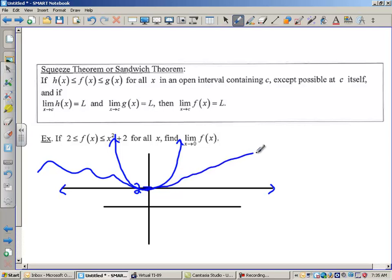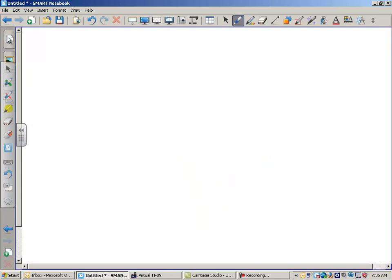And so even though I don't know anything about f, I know that since it's always in between 2 and x squared plus 2, then its limit must be the same as their limit. So this answer would be 2. Well that's enough for today and you guys will work on some limit problems tomorrow in class and I will see you guys then.